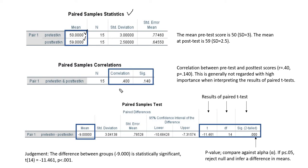You'll also see the correlation between pre-test and post-test scores is 0.40. You'll also see that it's not statistically significant.